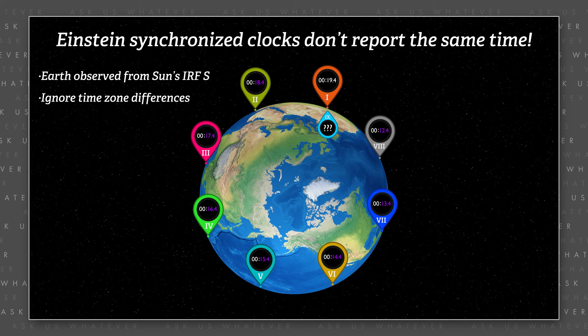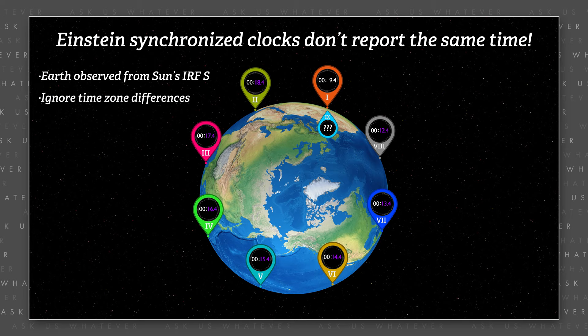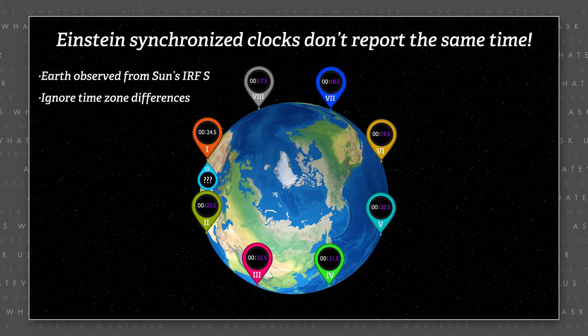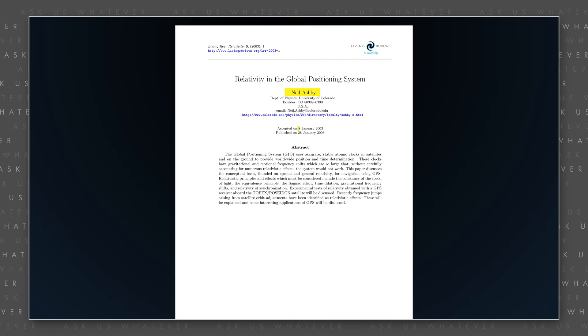just like the example with the clown and clocks A and B in the prior episode. The process of Einstein clock synchronization creates clocks that report different times of day, as can be observed from the S frame.